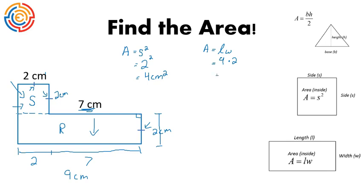All right, nine times two is 18 square centimeters. We're going to add those together to get our total area. So that will be four plus 18, which gives us 22 square centimeters. That's our total final area.